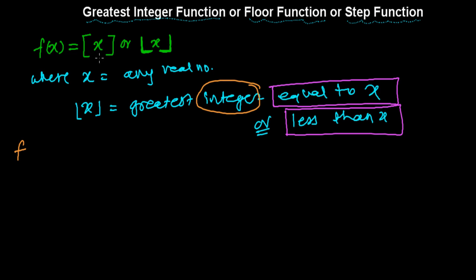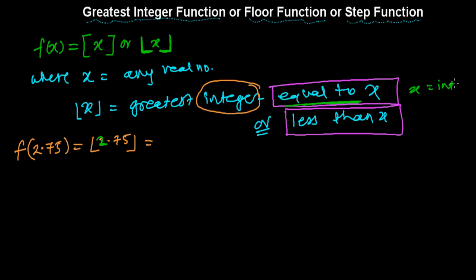Let me show you an example. Let's say I put 2.75 into the floor function. What does it give? We get an integer — not 2.75, 2.9, or 2.3. There are two cases: if x is an integer, we get that exact integer; if x is not an integer, we get the nearest integer less than x.